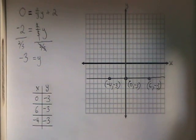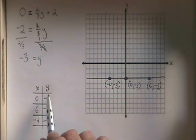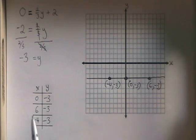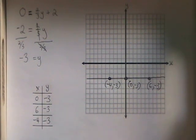This is how we graph a horizontal line. We isolate the y, we find the number y is equal to, and we fill the y side of the table with that number. We choose any numbers we want for the x side of the table, but we make sure x equals 0 is one of them. And then we graph the line, labeling the three points that were in the table.